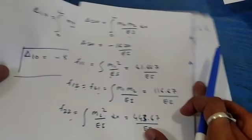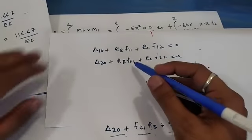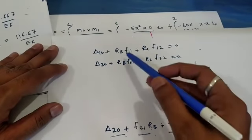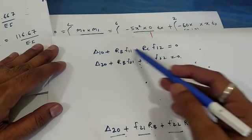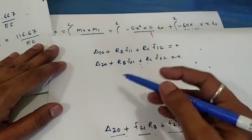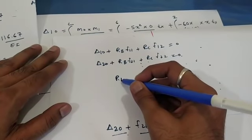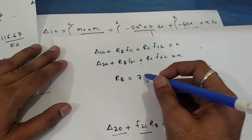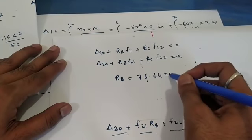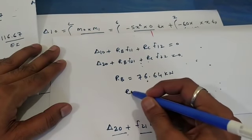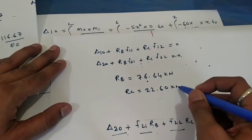Using the compatibility equations with all flexibility coefficients known, we solve the two simultaneous equations for the only unknowns RB and RC. The result is RB = 76.64 kN and RC = 22.60 kN.